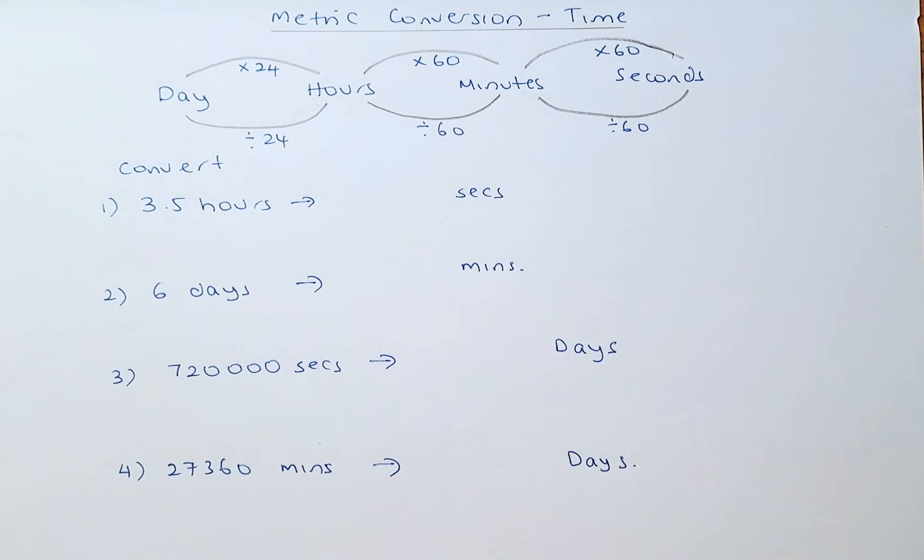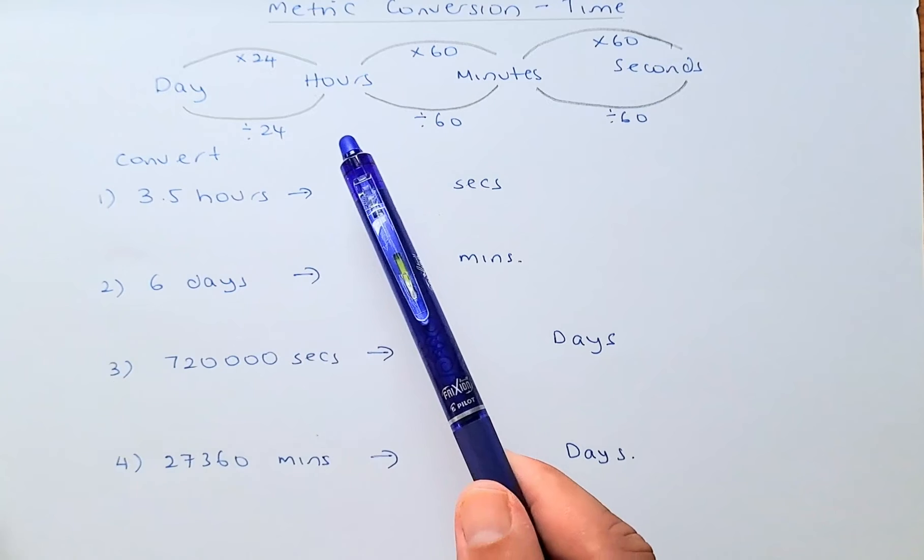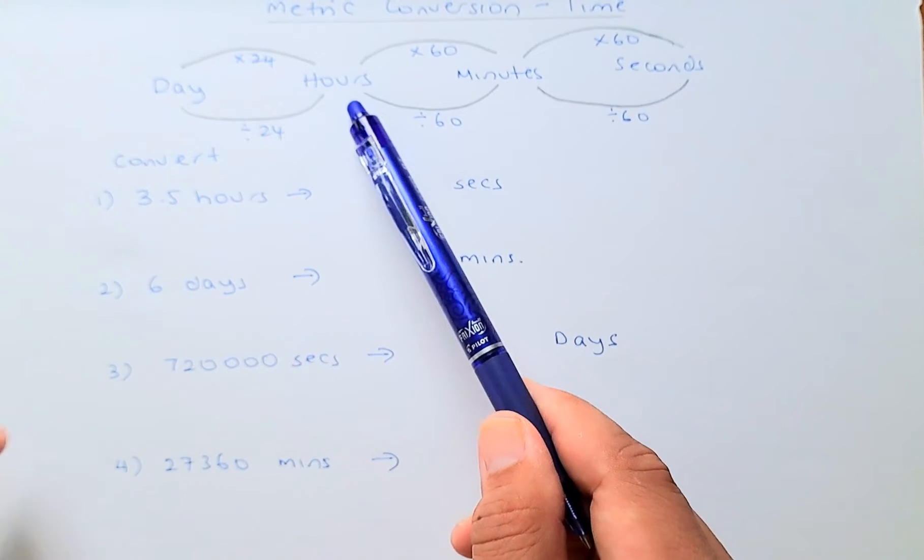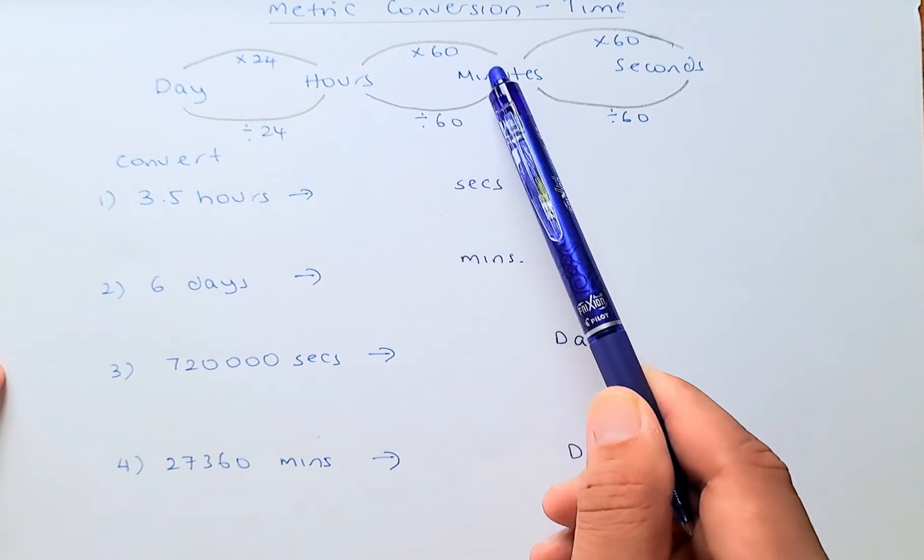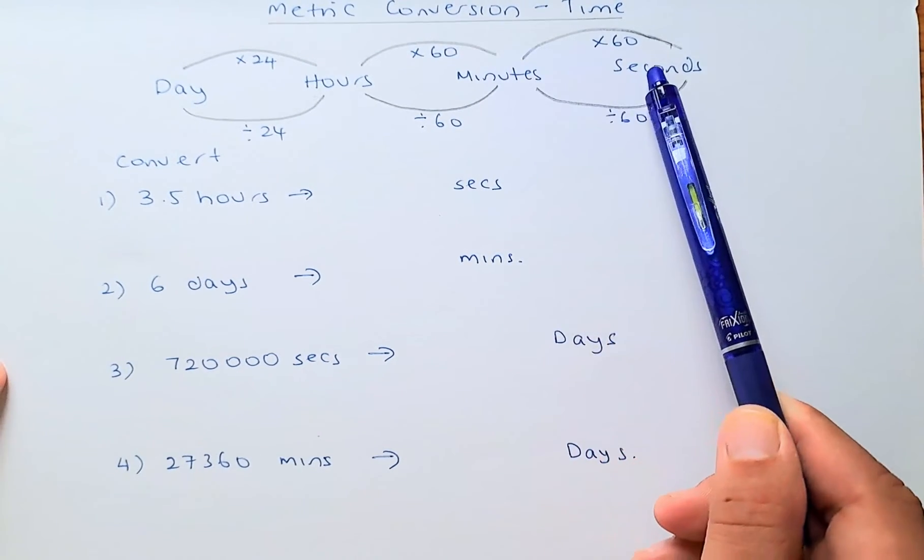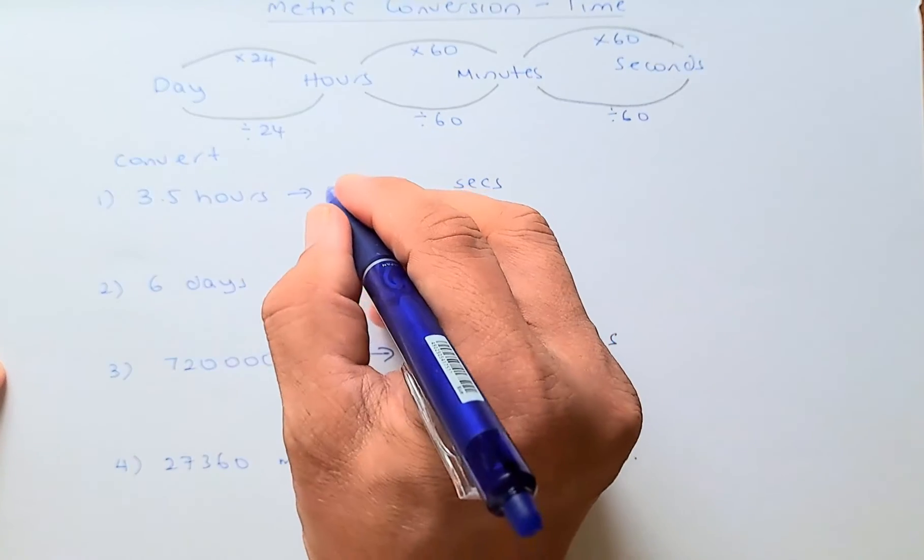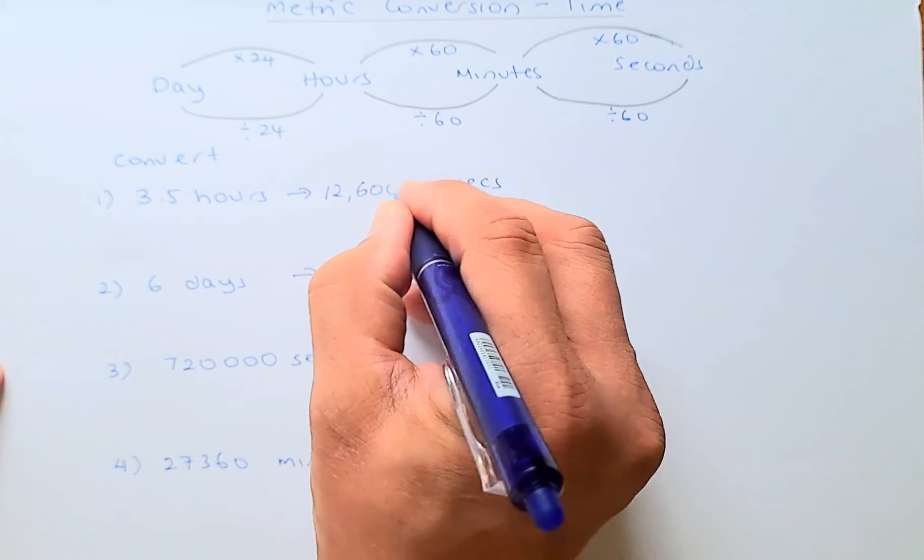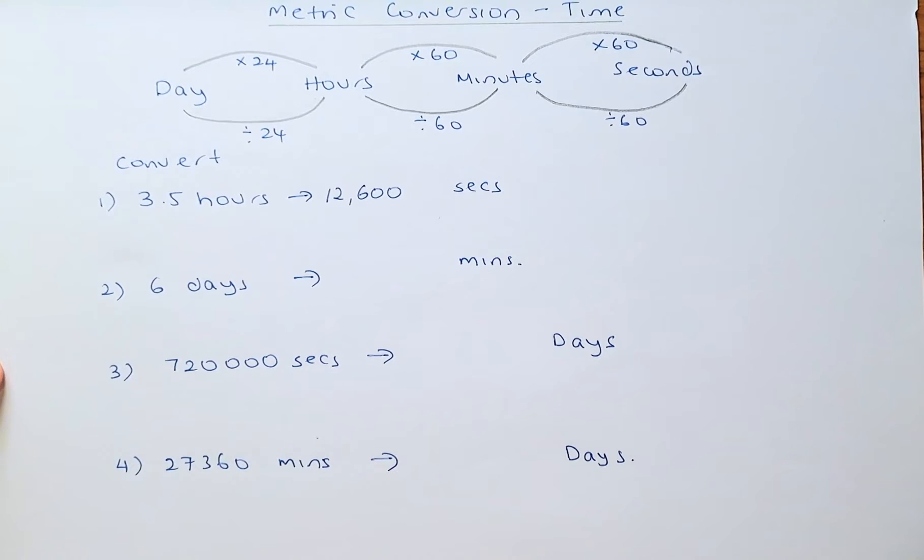If we know this chart very well, then we can convert any measurement very fast. For example, if I were to convert 3.5 hours to seconds, we are here and we want to move to there. So we multiply 3.5, multiply by 60, multiply by 60, and the answer is straightaway going to be 12,600 seconds. That's very quick, isn't it?